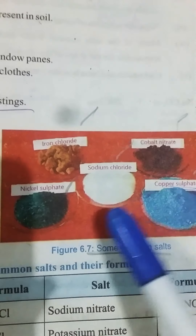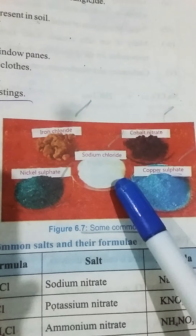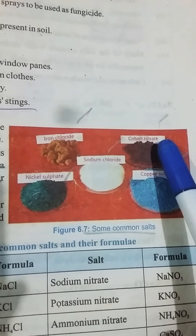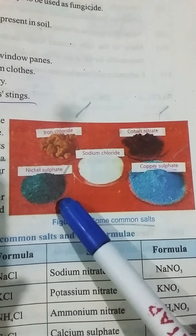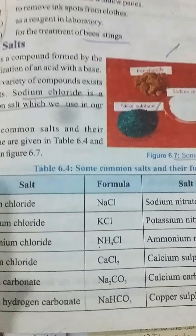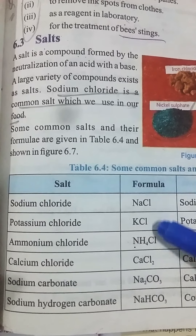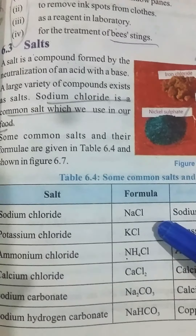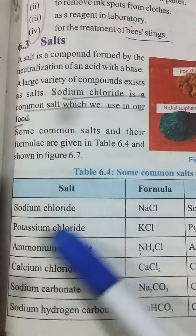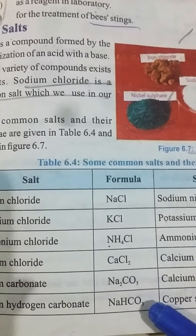Here we have some common salts. In the center we have sodium chloride, also known as the common salt which we use in our food, and also known as table salt. Here we have cobalt nitrate, copper sulfate, nickel sulfate, and iron chloride too. In the table we have some common salts and their formulas. In the first four we have salts with the chloride formulas: sodium chloride, which is the common salt (NaCl), potassium chloride, ammonium chloride, and calcium chloride.